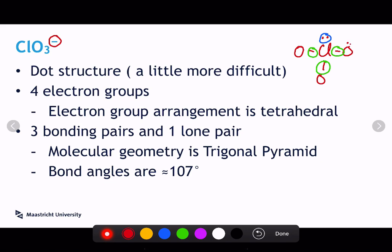I guess I should add the other lone pairs on the oxygens. They don't really affect anything here, but we want to be correct in how we portray this. So we've got four electron groups around that chlorine atom.